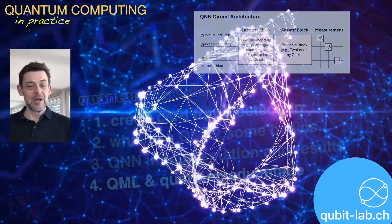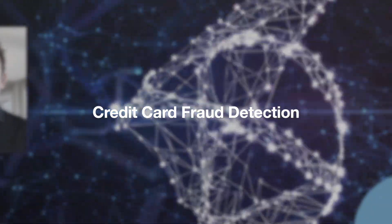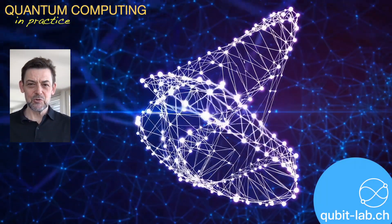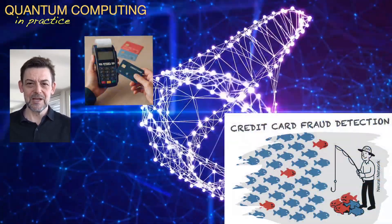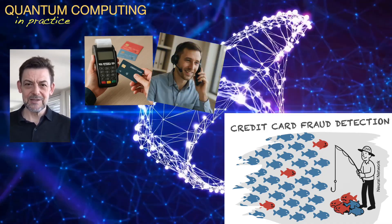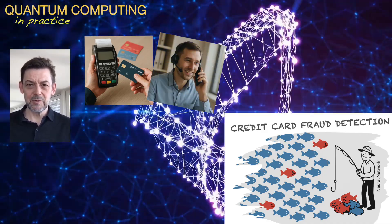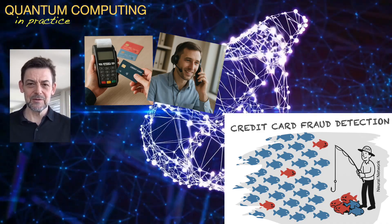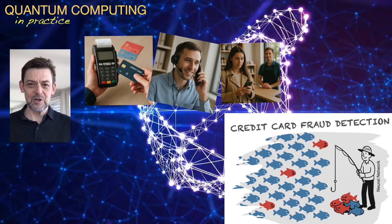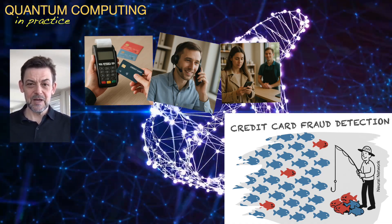Let's start with credit card fraud detection in general. Machine learning is already widely used in this field, often relying on deep neural networks or their variants. When a potential fraud is detected, the transaction may be paused or cancelled, while a real-time process, whether automated or handled by a fraud center agent, receives the alert and takes action.